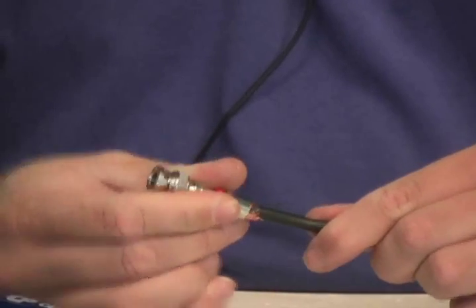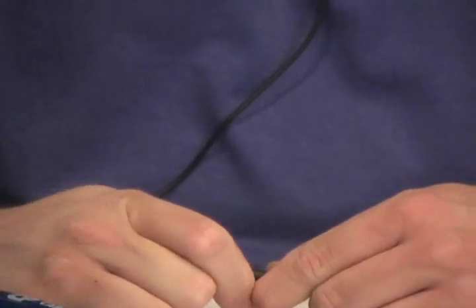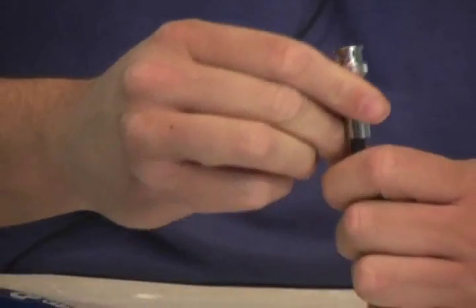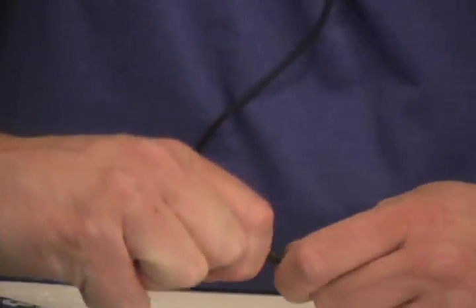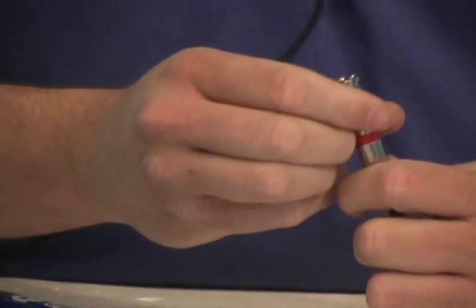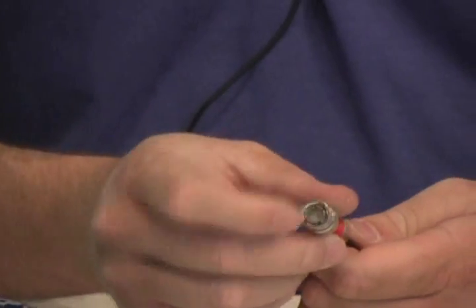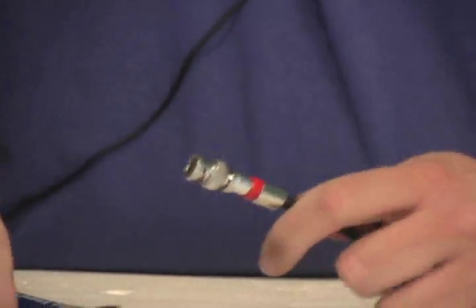Then you simply push it up into the cable. See right now it's not there. You need to twist it firmly onto the cable until it comes through like that and it almost becomes flush with the insides. Once that happens...